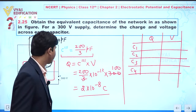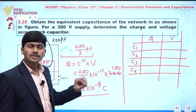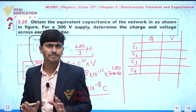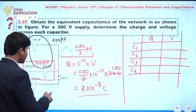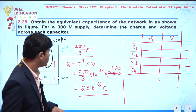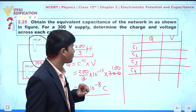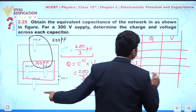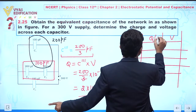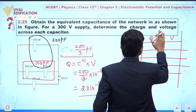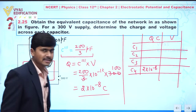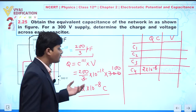The value of charge for the equivalent circuit is 2 × 10⁻⁸ coulomb. Since two capacitors in series always carry the same charge, we can directly say that on capacitor C4, the charge Q is also 2 × 10⁻⁸ coulomb.